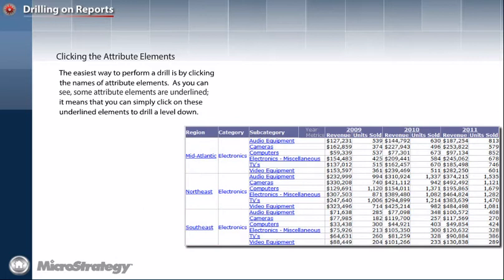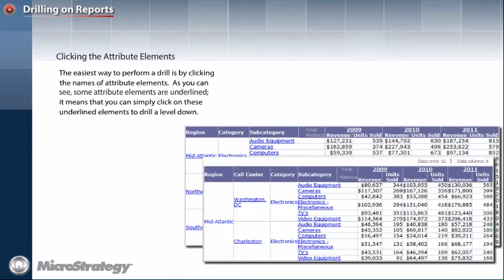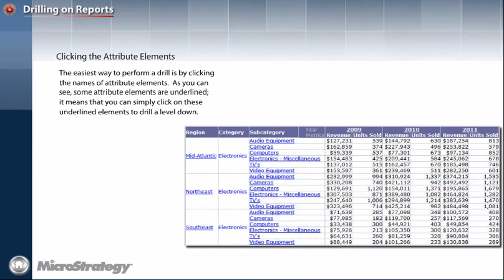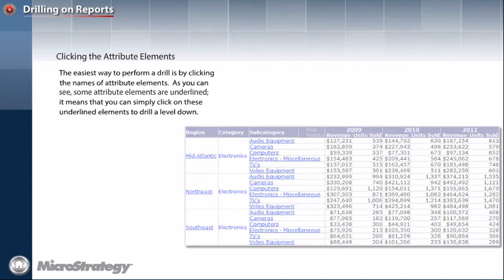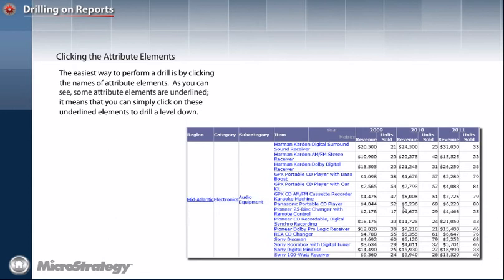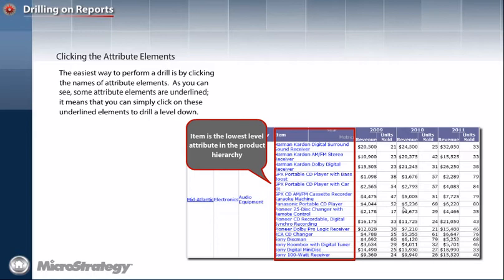For example, the region elements like Mid-Atlantic, Northeast, and Southeast are underlined. These elements contain a hyperlink. If you click a region attribute element, say Mid-Atlantic, you will see the revenue and units sold for each category and subcategory for all the call centers in the Mid-Atlantic region. Note that attribute element names only contain hyperlinks if the attribute level directly below them is not already on the report. For example, the category names are not hyperlinked because a subcategory attribute is already on the report. Also, if an attribute element is the lowest level in a hierarchy, it is not hyperlinked because you cannot drill to a lower level.